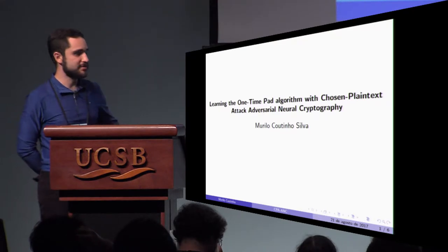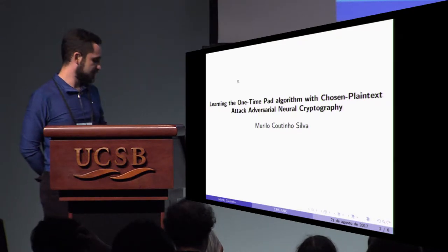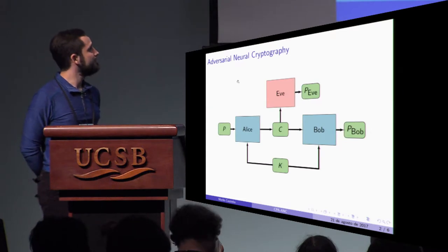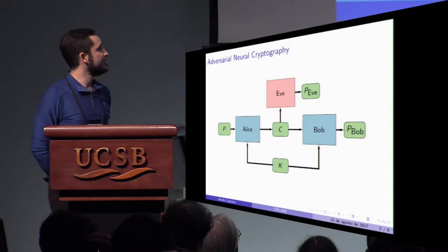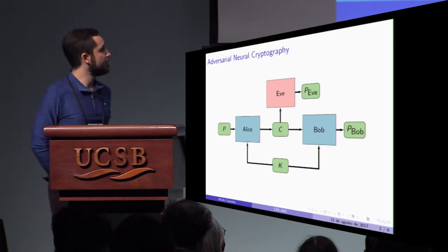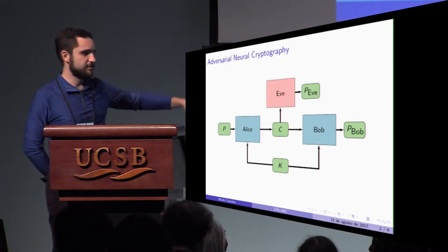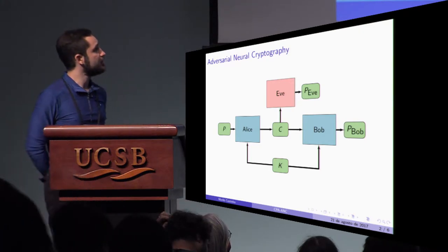They proposed this adversarial neural cryptography in which basically they have three neural networks: Alice, Bob, and Eve that was in this kind of adversarial setup.